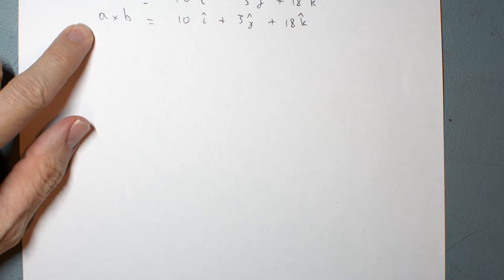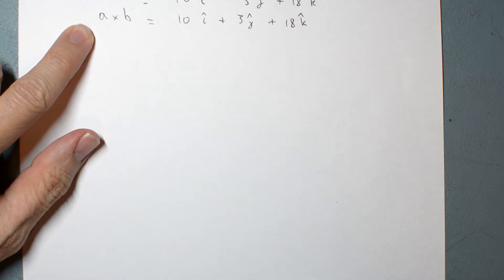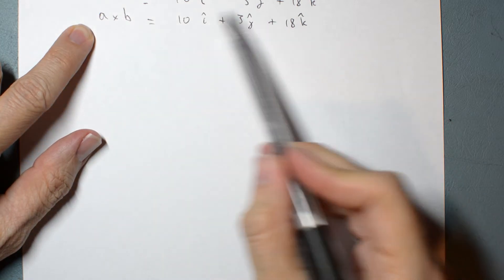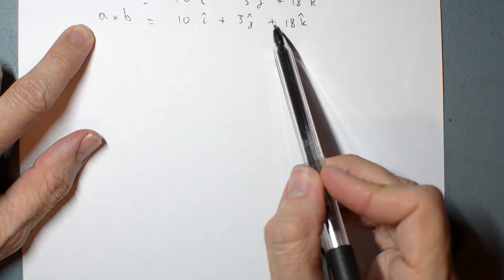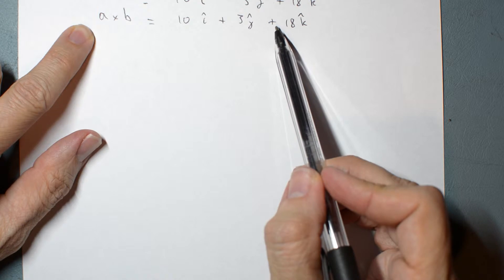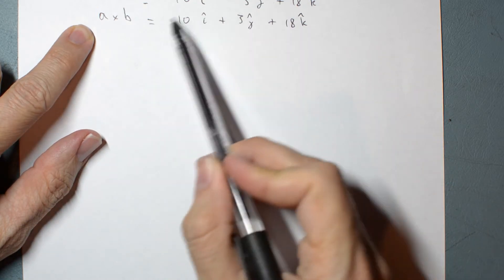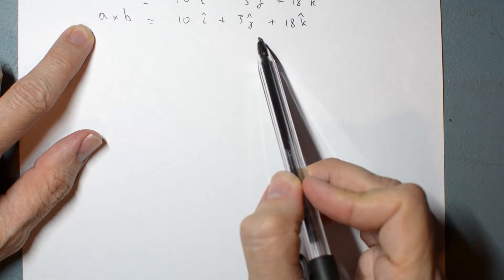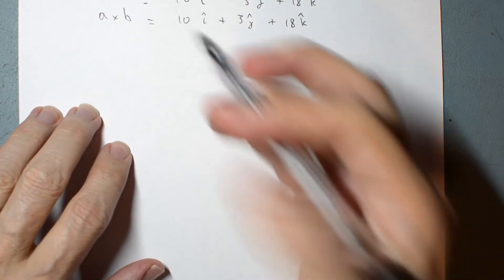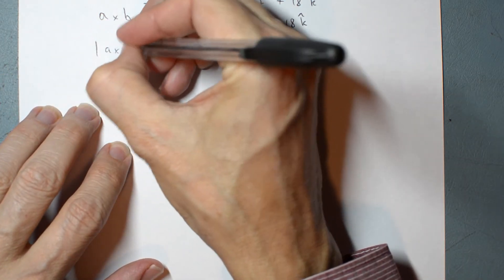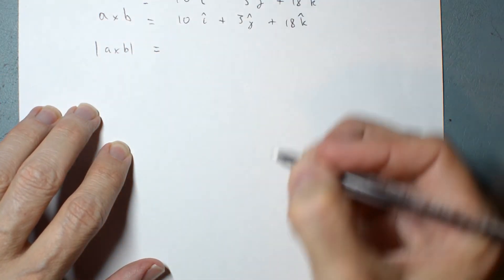Now, if that's A cross B, I need a vector that's in this direction but has magnitude 5. So what I'm going to do is turn this vector into a unit vector and then multiply by 5.